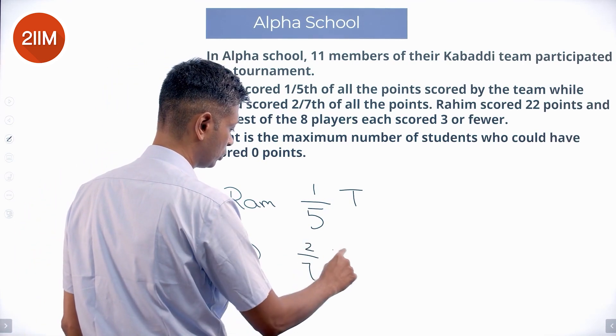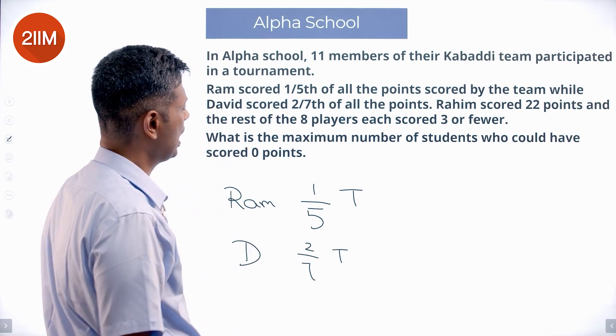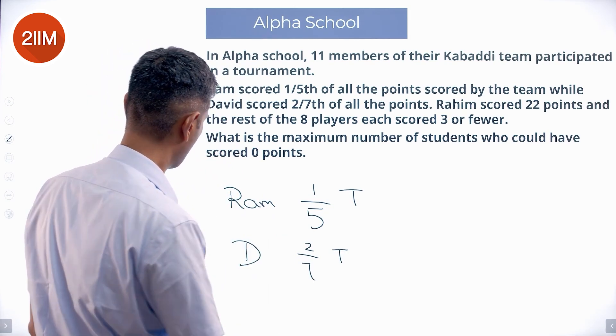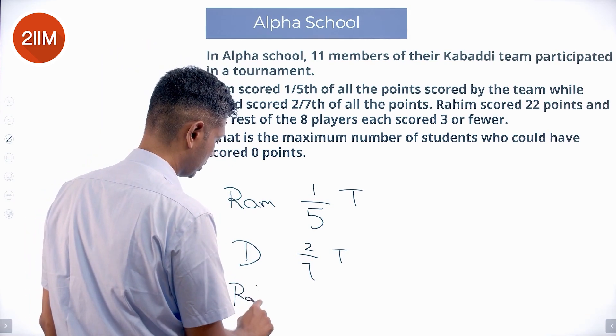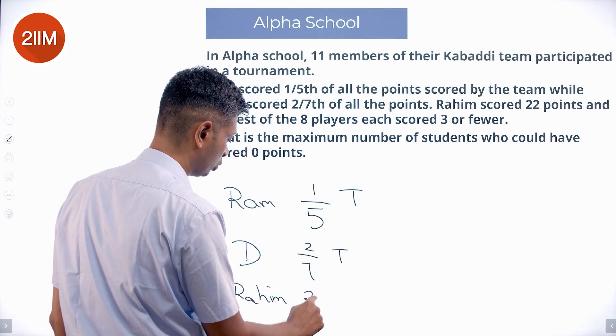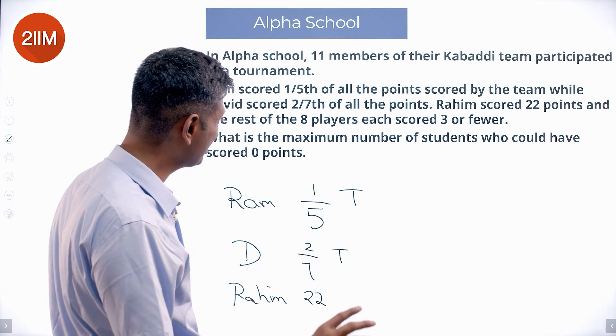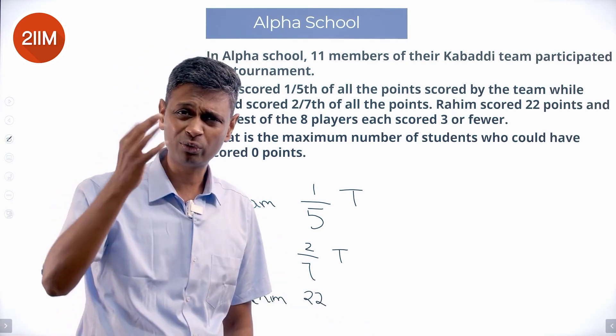David scored two by seven of the total points. Rahim scored 22 points. The rest, eight players, each scored three or fewer.